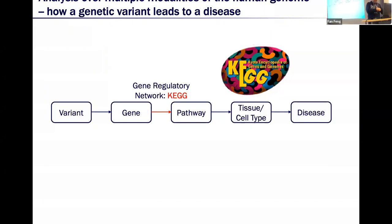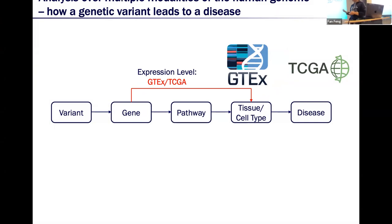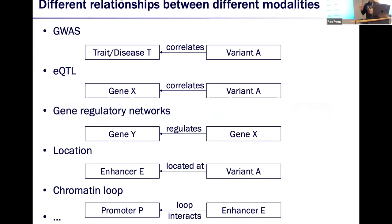So for pathways we have data from KEGG and Reactome. We also have the relationship between genes and tissues or cell types — we can find whether a gene is expressed in a tissue or cell type using GTEx and TCGA databases. At last we have ontologies, such as cell ontology and disease ontology, that include the relationship between tissue types, cell types, and diseases.